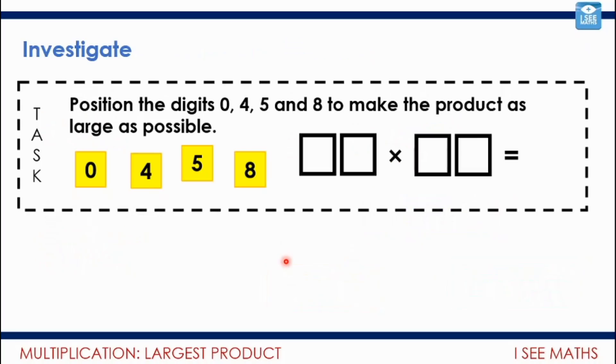This is a bit of a longer investigation for us to go through together. What I want you to do is this. You're going to make a two digit by two digit multiplication. If you need a calculator to actually help doing the calculation today, that's okay. Equally, you might manage to do the calculation element without a calculator. It's entirely up to you. But what you're going to need to do is position the digits 0, 4, 5 and 8 to make the product as large as possible. So have a think. Which digits will you put in which places? How do you know? Pause the video and start the task off.